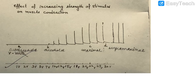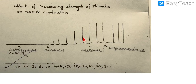Students might get confused here: we learned that muscles follow the all-or-none law, which states that either there will be no contraction or there will be maximum contraction. So the confusing point is — if we are increasing the strength of the stimulus, why is the muscle contraction increasing? Let's make this clear.